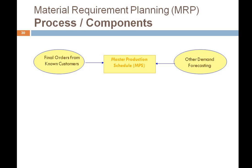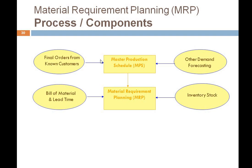Once we have 1000 units from MPS, Material Requirement Planning breaks that down into components and sub-components. So if MPS says we need 1000 units of Product X, MRP answers two questions: how many raw materials and components are needed, and when they need to be ordered — so that MPS can accordingly manufacture or produce on time.